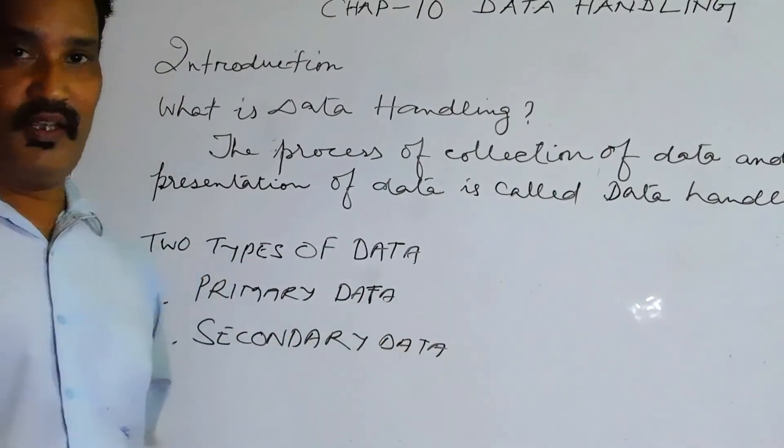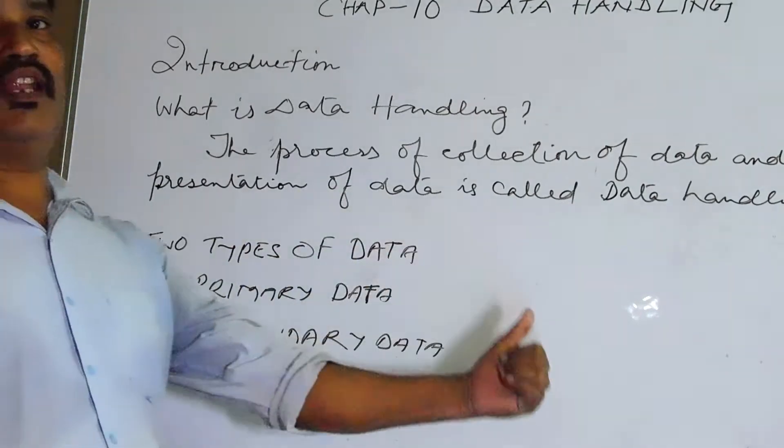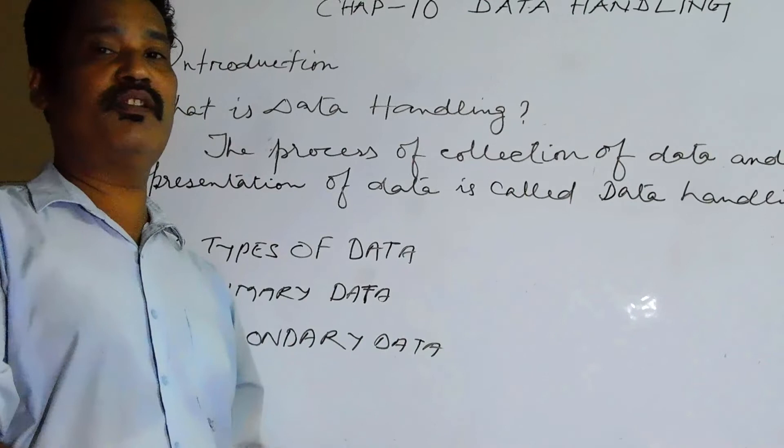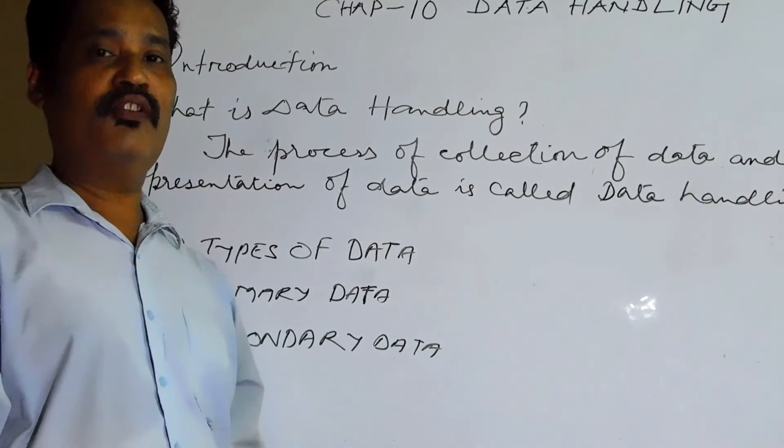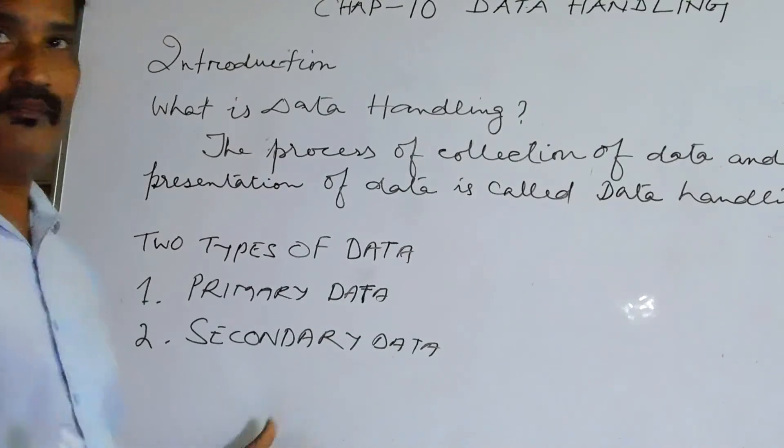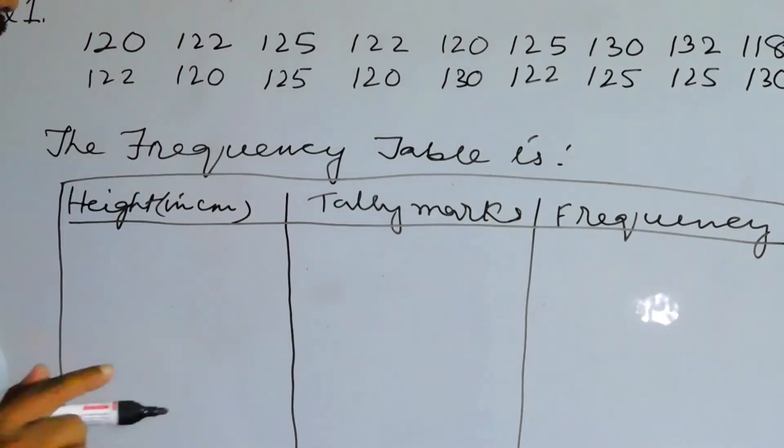But here what happened, you were asked to collect the data for your mother. So when another person collects the data for the investigator that is called secondary data.